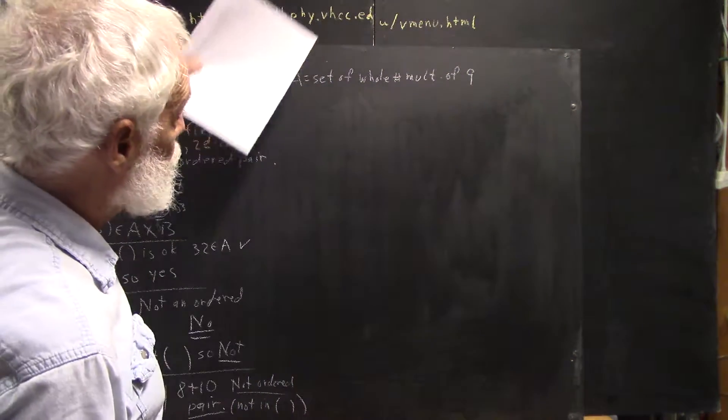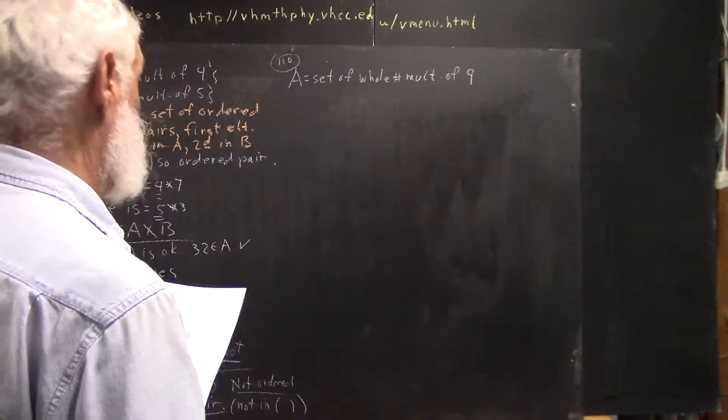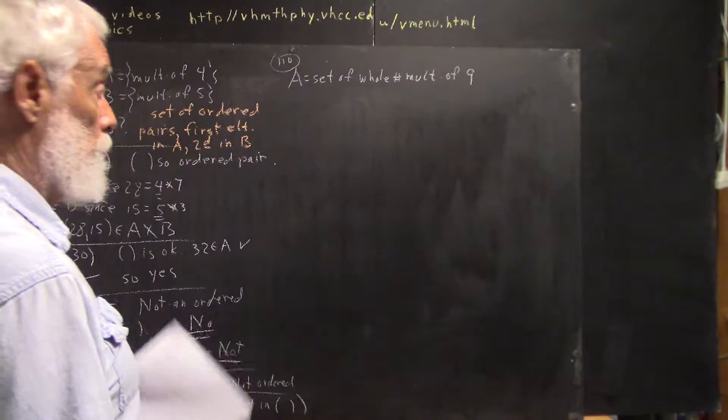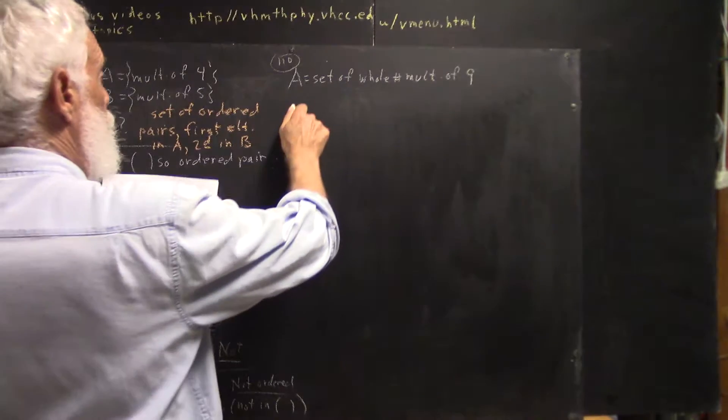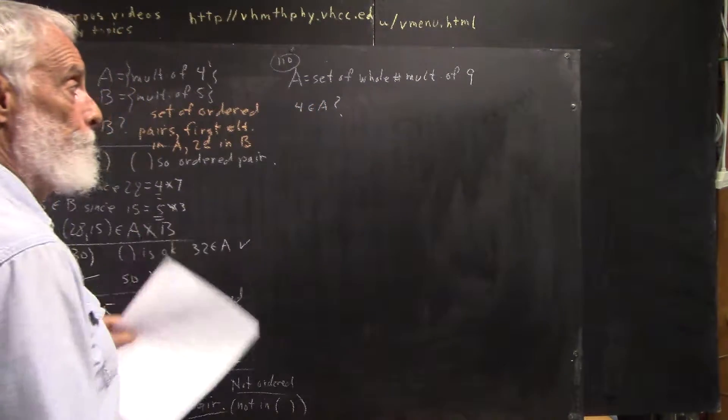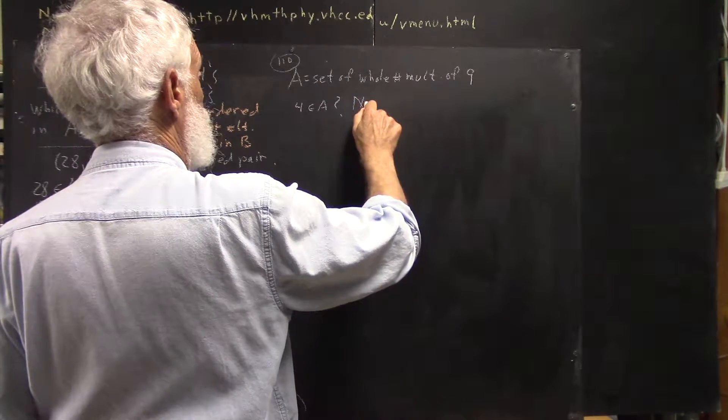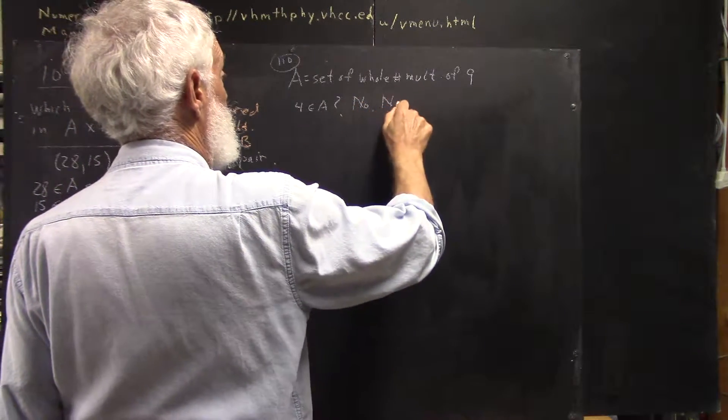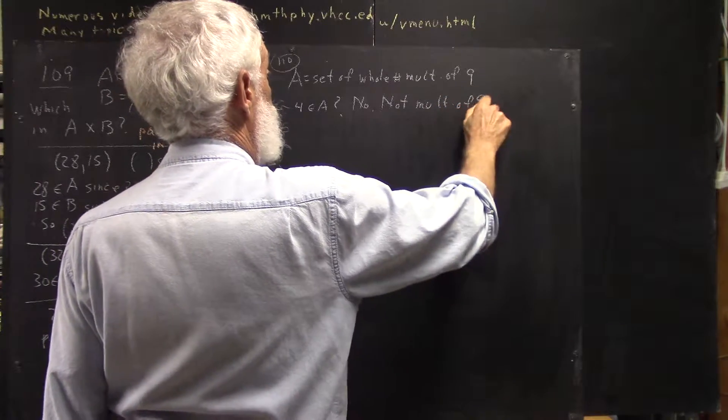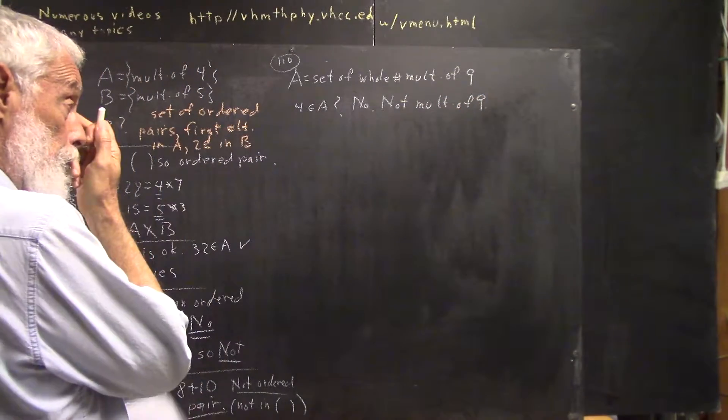Number 110. A is a set of whole number multiples of 9. Now we want to know if it's true. Is 4 a member of A? No. It's not a multiple. 4 is not a multiple of 9.